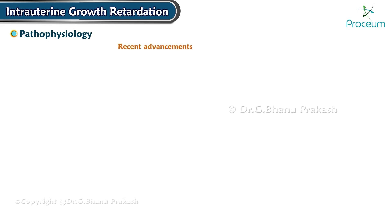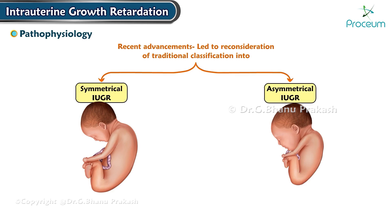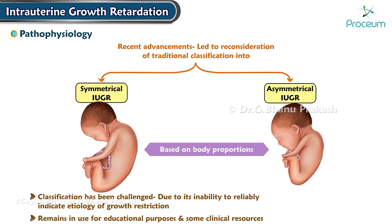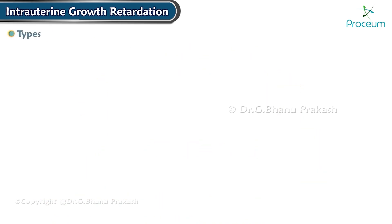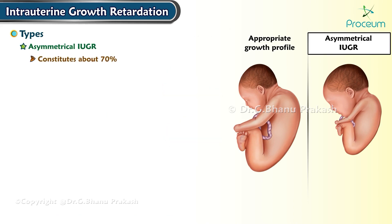Recent advancements in understanding intrauterine growth restriction have led to a reconsideration of the traditional classification into symmetrical and asymmetrical forms based on body proportions. Although this classification has been challenged due to its inability to reliably indicate the etiology of growth restriction, it remains in use for educational purposes. Asymmetrical intrauterine growth restriction constitutes about 70 percent of cases.